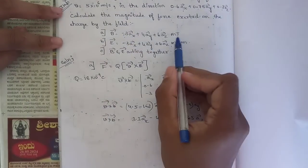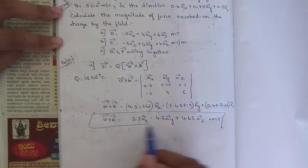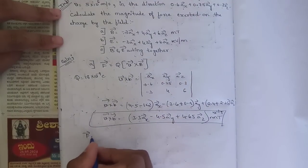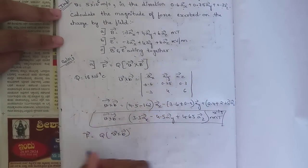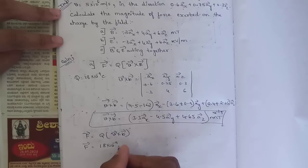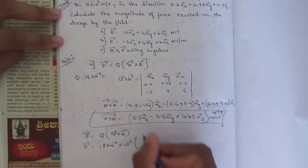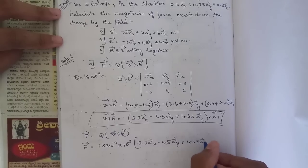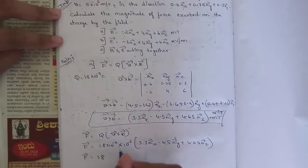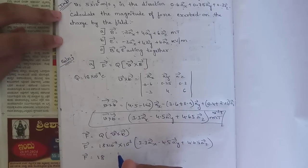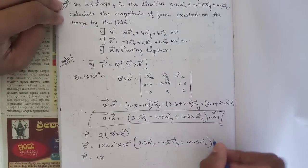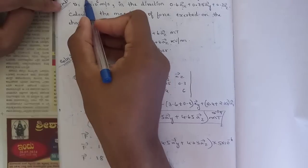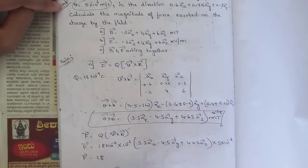Since the magnetic field was given in milli-tesla, we write v × B with a factor of 10^-3 Tesla. Now F = q(v × B), so F = 18×10^-9 × 10^-3 × (3.3ax - 4.5ay + 4.65az). We also need to multiply by the velocity magnitude 5×10^6, giving 18×5 = 90.